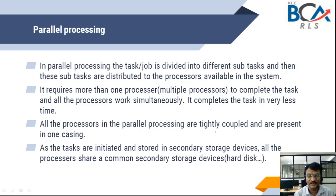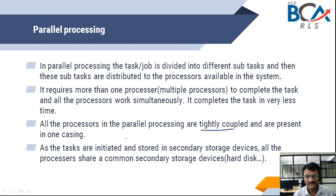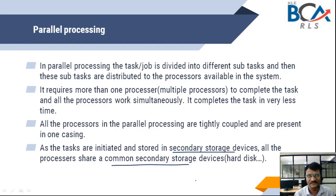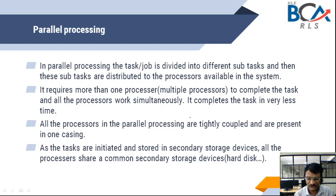All the processors in parallel processing are tightly coupled and are present in one casing — one physical casing with slots. As tasks are initiated and stored in secondary storage devices or any other system, all the processors share a common secondary storage device, that is a hard disk or any other device. It might be a server or anything. All these parallel processing systems share the same secondary storage device.